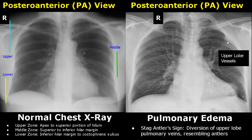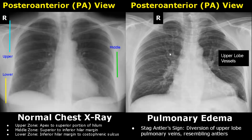Pulmonary edema is a condition in which there is fluid accumulation in the lungs' air sacs. It has a number of features on x-ray. One of them is the stag antlers sign, in which there is diversion of upper lobe pulmonary veins which resemble the antlers of a deer — that is why it is called the stag antlers sign. In the normal x-ray, we do not see such appearance.